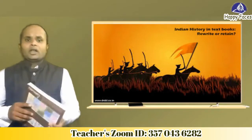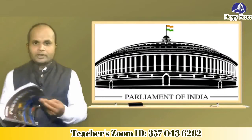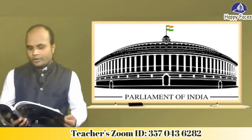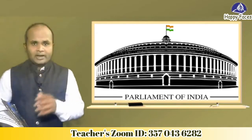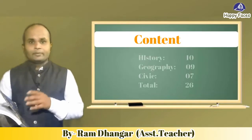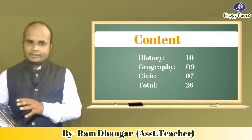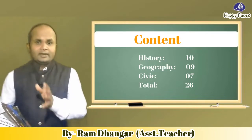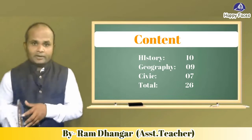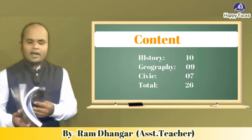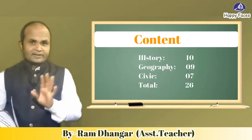Along with history, this book covers geography and social and political life of the country as well. In total, there are 3 subjects in this book, having a total of 26 lessons. In history, there are 10 lessons. In geography, there are 9 lessons. And in civics, there are 7 lessons.